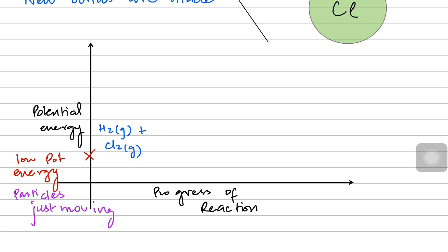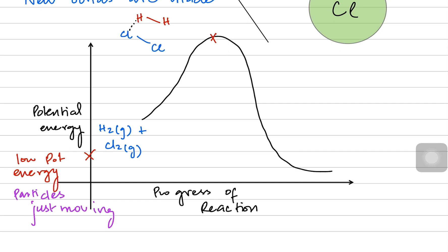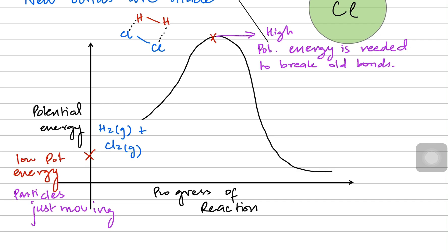As the graph begins, the particles are just moving towards each other, then they reach a peak, and then they reach the product. They need such high potential energy at the peak because the H–H bond and the Cl–Cl bond have to be broken while the HCl bond has to be made. They absorb energy to break the bonds and reach a peak with high potential energy. The graph goes upwards because energy is absorbed to break the reactant bonds — that is known as the activation energy.